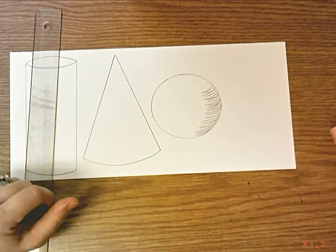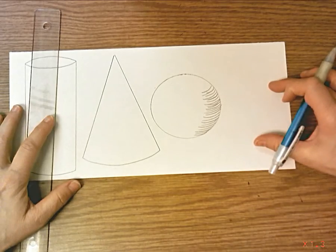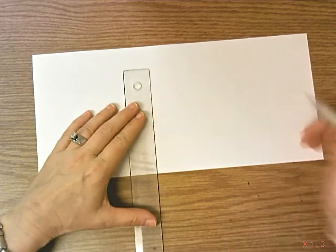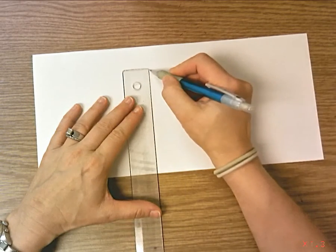And then the hardest one is a cube. And I didn't leave myself a lot of room here, so I'm going to flip my paper over and show you how to do a cube on the back. You want to start with a square. And remember a square has four equal sides.